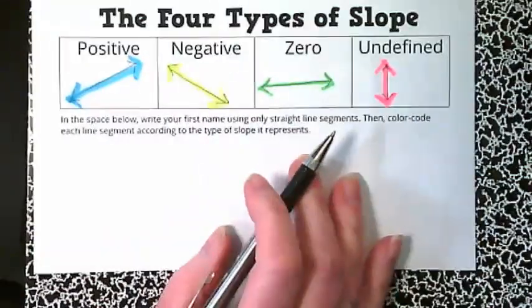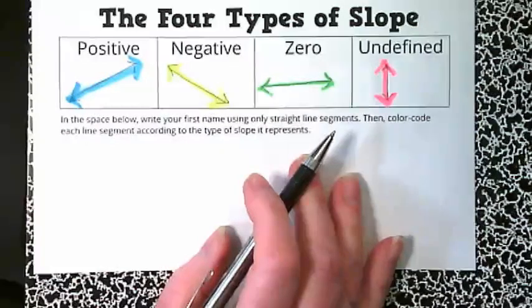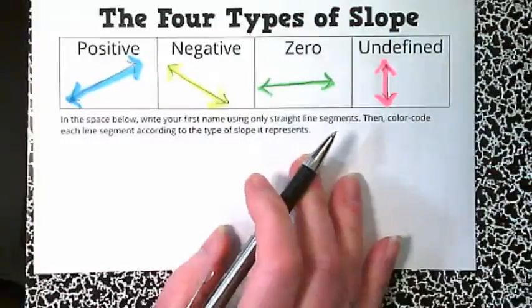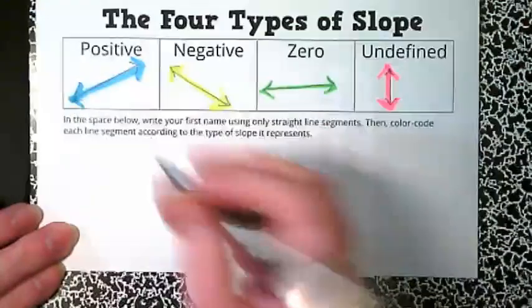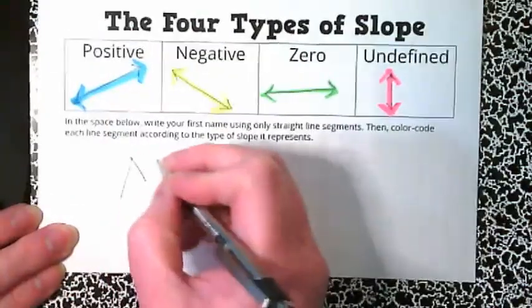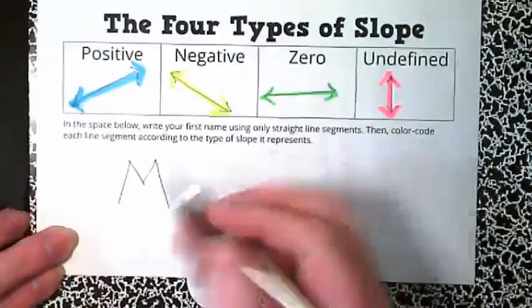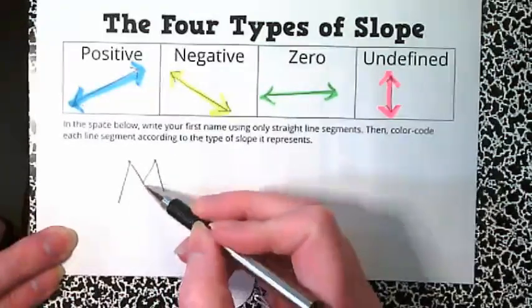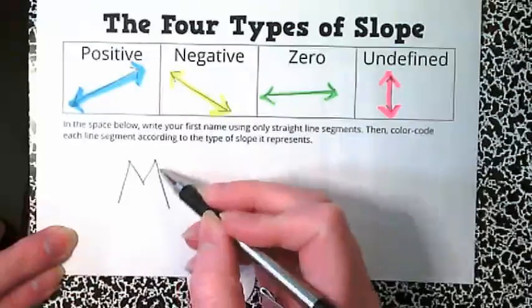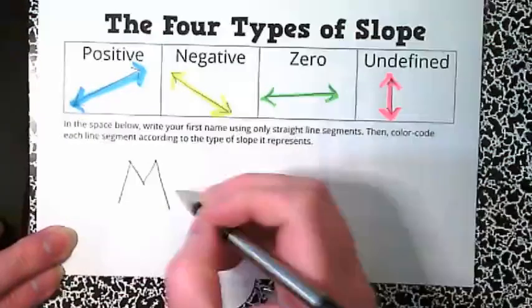I'll be honest, my first name tends to be all zero and undefined, so I'm going to use my school name. Do you see the M for misses? Positive slope, positive slope, negative slope, and negative slope.